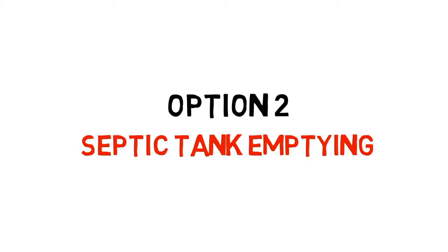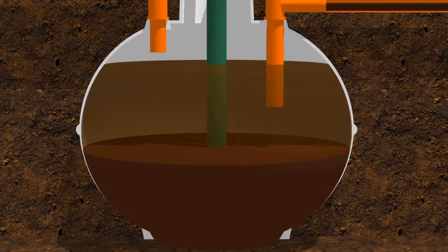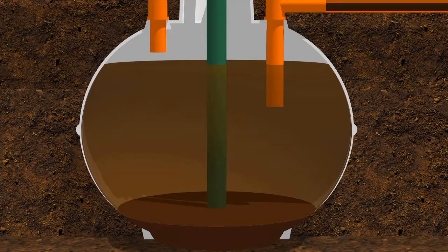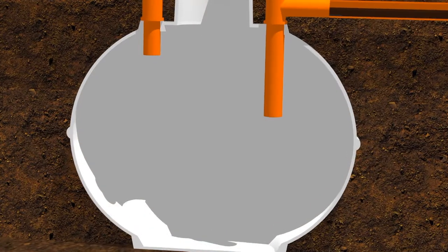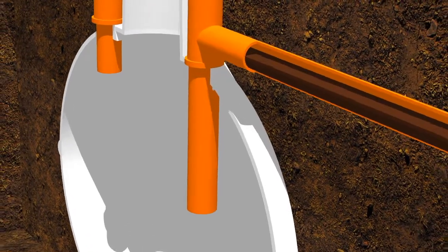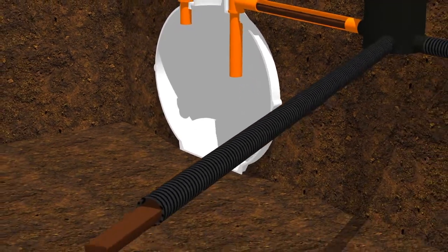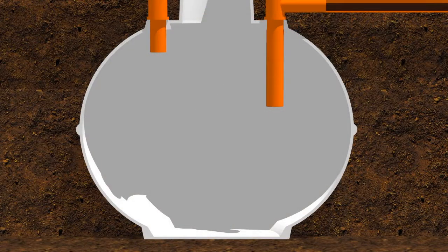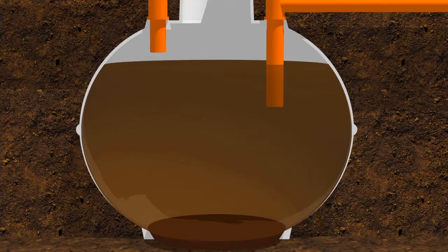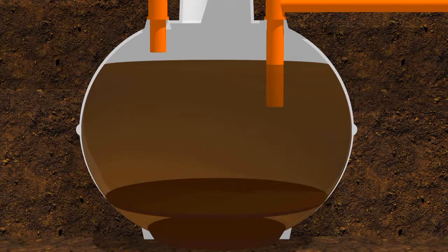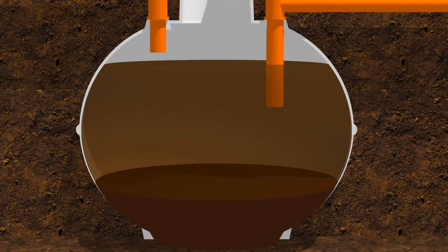Option two: septic tank emptying. Many people get their septic tank sucked out, but whilst this sounds like a good idea it doesn't really fix the problem. Although the wastewater inside the tank is sucked out, the fat, grease, and sludge causing all the blockages is still stuck in all the pipes leading to and from the soak away. This sludge will continue to clog and block the entire soak away system and the whole process will start all over again. Within a few days the septic tank will fill up again with stagnant wastewater and start to smell — and at £200 each time, this method can soon become quite an expensive option.